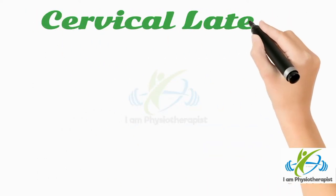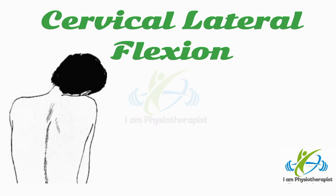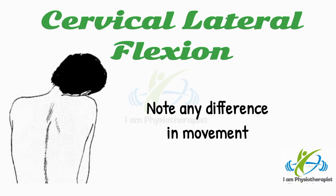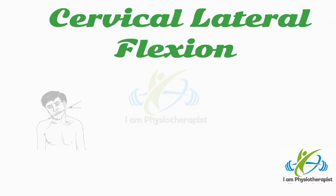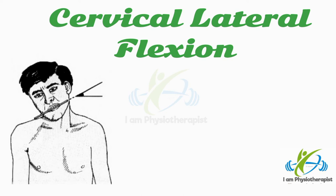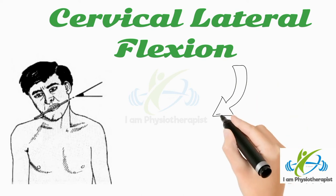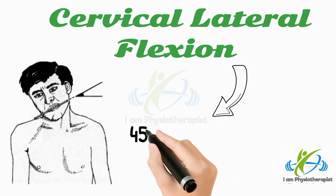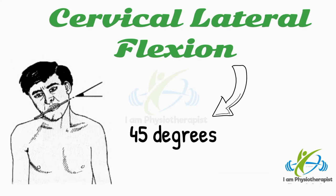To check lateral flexion, ask the patient to tilt his head to one side. In normal cases, the ear can easily touch the shoulder with slight shrugging of the shoulder. Repeat on the other side and note any difference in movement. For greater accuracy, a spatula clenched in the teeth can be used as a pointer. Normal range is about 45 degrees. Lateral flexion is commonly lost in cervical spondylosis.